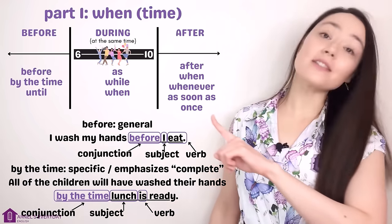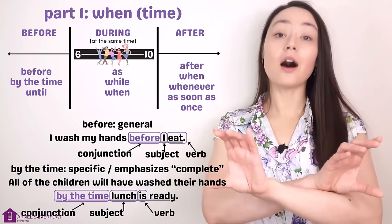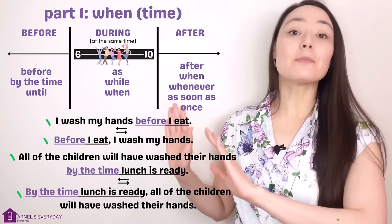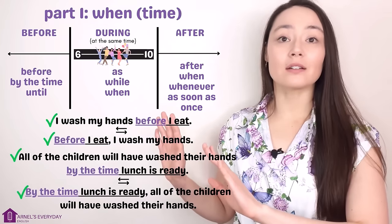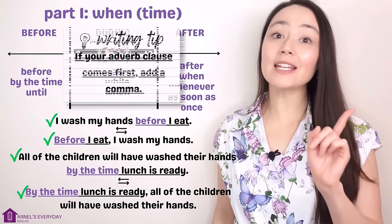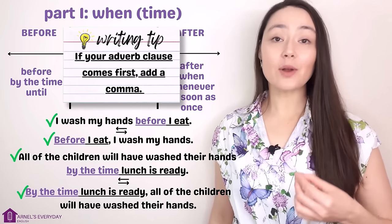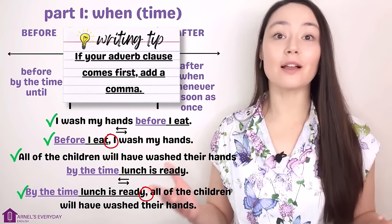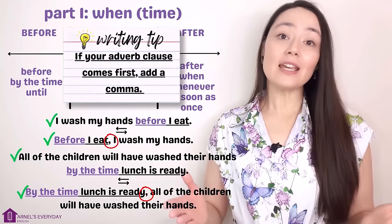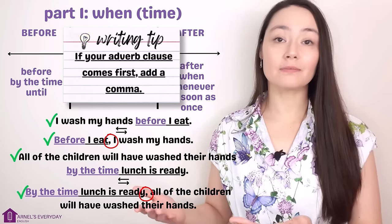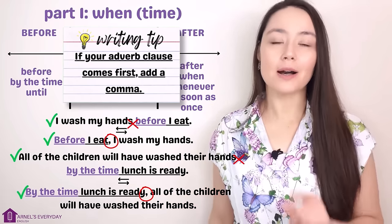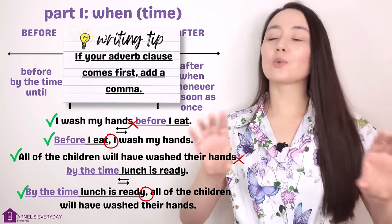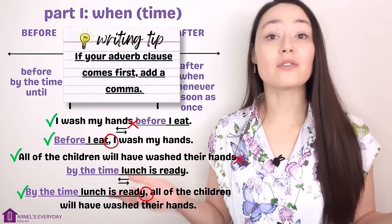Can the clauses be switched around? Of course — this is perfectly correct. Writing tip: if your adverb clause comes first, use a comma to separate the two clauses. If your independent clause comes first, you don't need a comma. Keep that in mind. For the rest of this lesson, I'm going to switch the clauses around whenever I want.